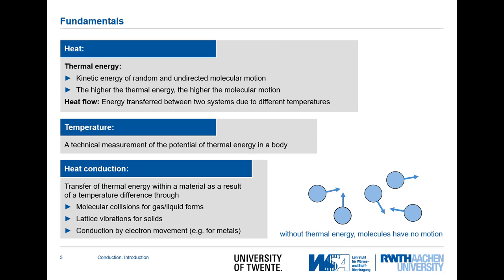The fundamentals first. Heat is a thermal energy — it is the kinetic energy of a random, undirected molecular motion. As soon as this motion becomes directed, we will have a fluid flow. But if it is undirected and randomly distributed, then we talk about temperature. The higher the thermal energy, the higher is the molecular motion. The heat flow is energy transferred between two systems of different temperature, and the temperature difference is the driving potential for this energy flow.